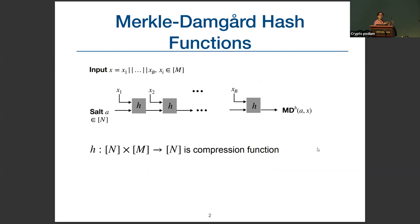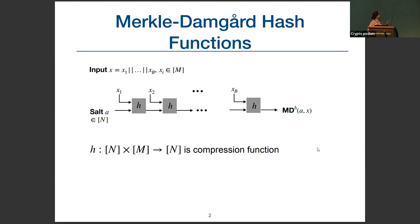Merkle-Damgård is one of the most popular constructions for hash functions. It is so popular that it motivated us and a lot of prior works to study this particular construction. Hash algorithms like MD5, SHA-1, and SHA-2 are all based on this construction. This construction uses a one-way compression function to hash messages of arbitrary length by breaking the message into blocks of fixed size. I will always denote the compression function by H, mapping a domain of size N×M to a range of size N. The message X is broken into B blocks X_1 through X_B, and the compression function is iteratively applied on these blocks to obtain the output of MDH.